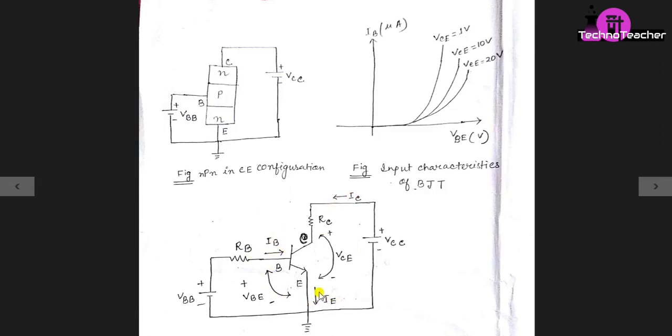The direction of these currents will be reversed if we use PNP transistor. Here we can see that IB is the input current and VBE is the input voltage. So if you want to study the input characteristics, you have to study the relationship between IB and VBE.